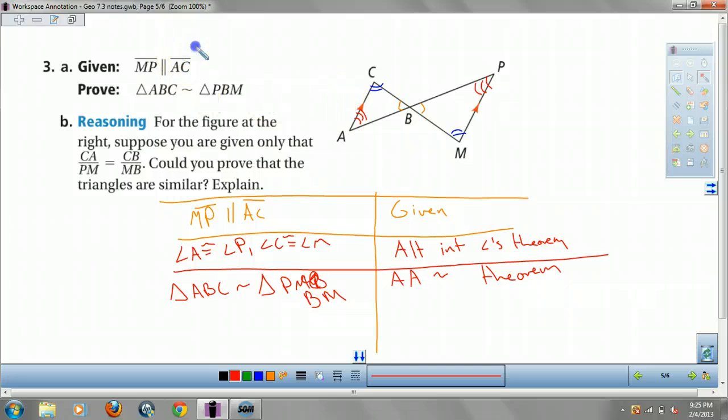Now, let's say they didn't give us that this was parallel and they said that CA and CB over MB were your two. I'm going to have you guys think about that one. When I come around and check your notes, show me your answer for a prize. Capisce? Last slide.